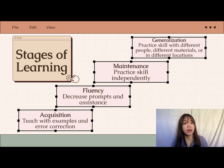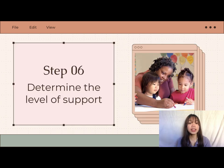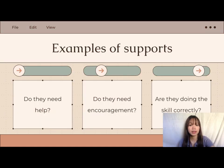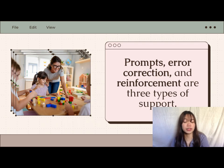To summarize: acquisition is where the teacher teaches with examples and corrects errors; fluency is to decrease prompts and assistance; maintenance is for the student to practice the skill independently; and generalization is where the student performs practiced skills in various situations. We are now on step six: determine the level of support. Use the identified stage of learning to determine the level of support needed to demonstrate the new behavior. Ask yourself: what support does the student need to demonstrate this skill?